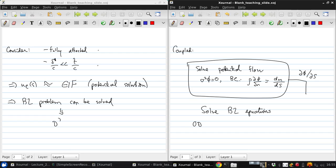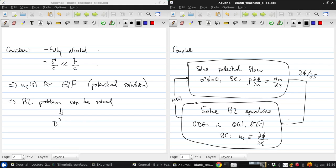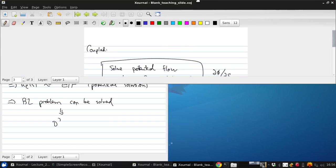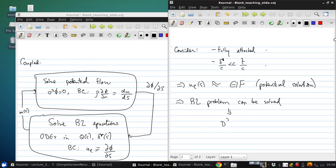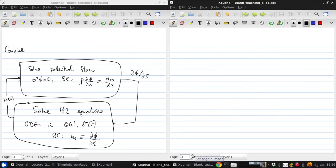These are ordinary differential equations for theta delta star with the boundary condition that the edge velocity is given by the potential. And then out of this would come the mass defect, M(S), which could be fed back to resolve the potential flow. And these, conceptually, could be iterated upon until a solution is achieved in which neither part continues to change.